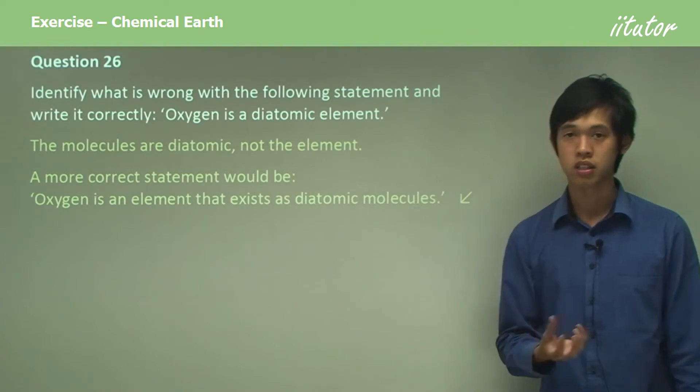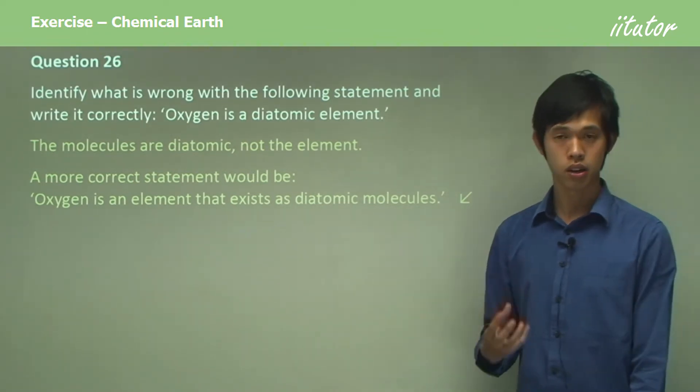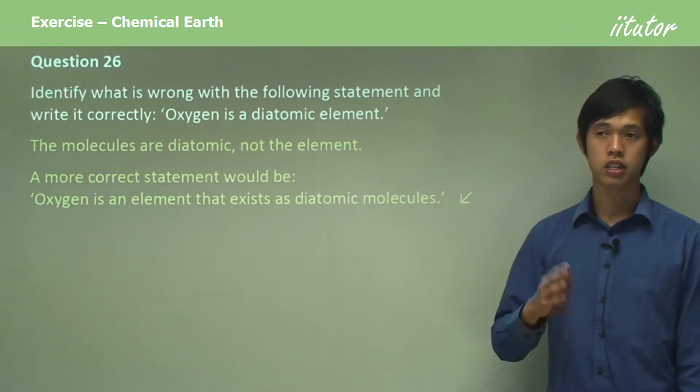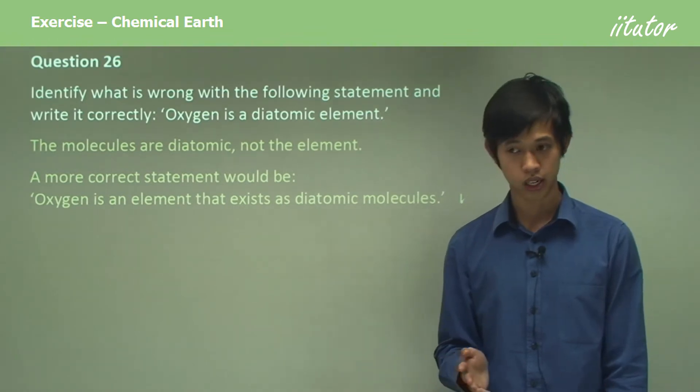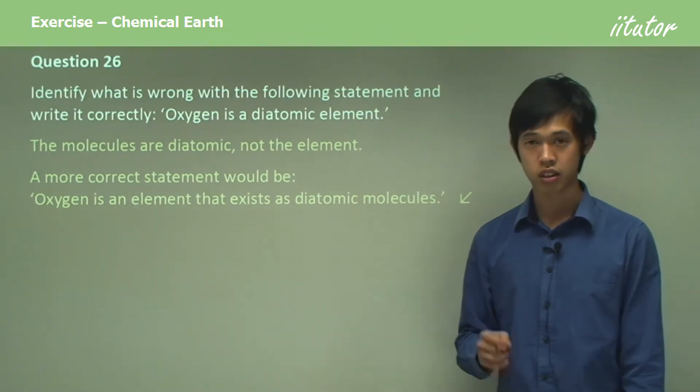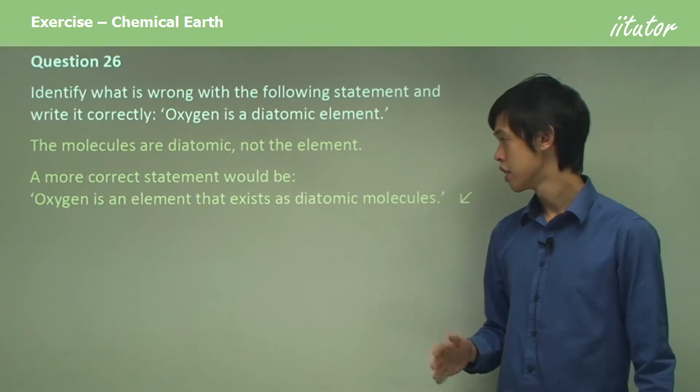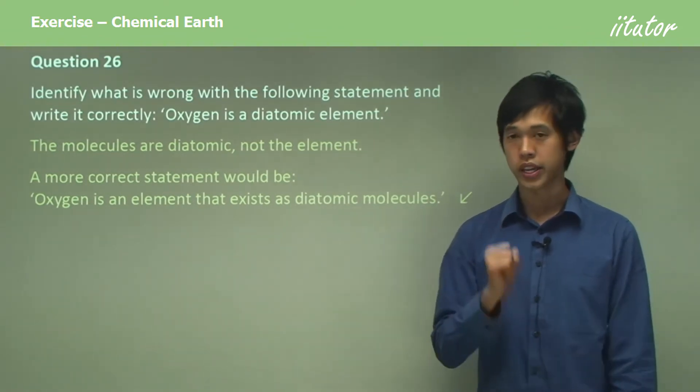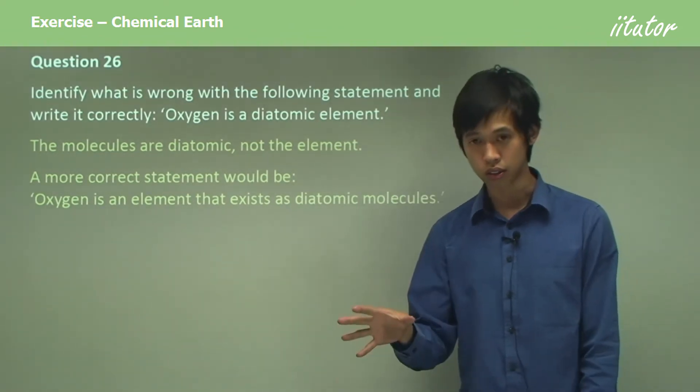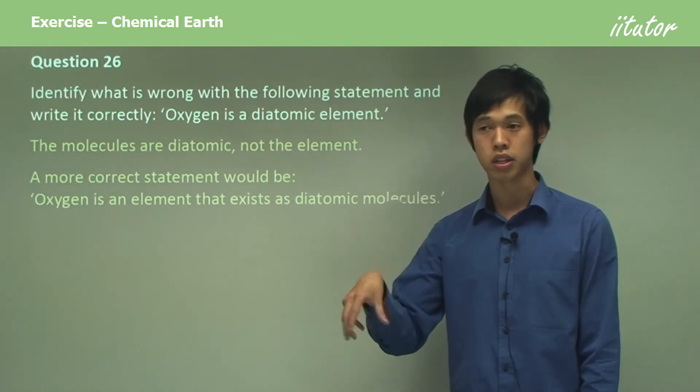So an element is defined as a substance that is composed of only one type of atom. You can't have a diatomic element because that doesn't even make sense. What you can have is an element that's made up of diatomic molecules of the elemental atom.